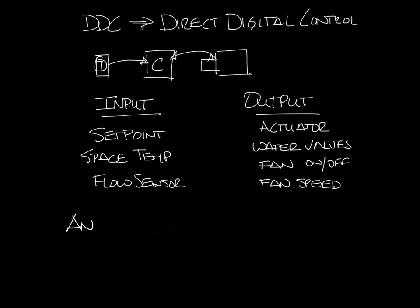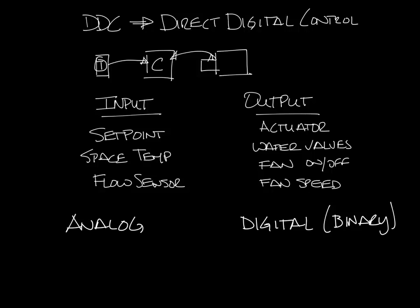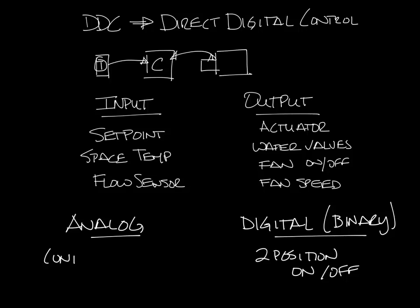DDC controls have two types of inputs and outputs: analog and digital, which is also known as binary. Digital inputs and outputs are two-position, usually on-off, whereas analog inputs and outputs can be anywhere within a continuous range. Think about how an analog clock hand sweeps between the minutes, but a digital clock is always on a particular minute.